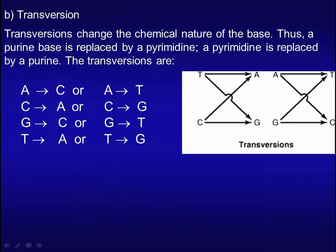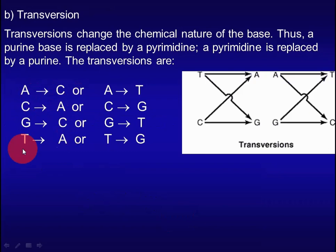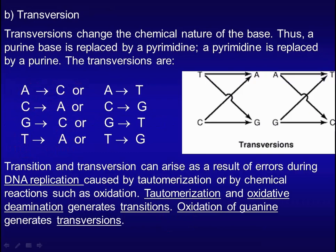Transversion changes the nature of the base — a purine base is replaced by a pyrimidine, or a pyrimidine is replaced by a purine. As shown in lecture B07, oxidative deamination generates transitions. Oxidation of guanine generates transversions.